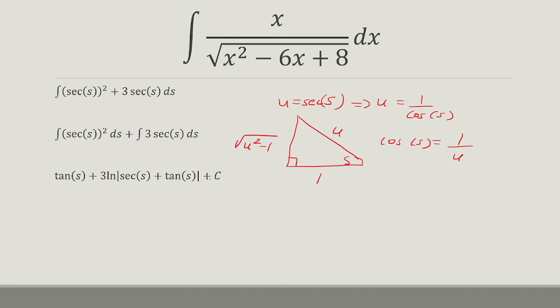And so tangent of s is just opposite over adjacent. That's going to be the square root of u squared minus 1. Secant of s is hypotenuse over adjacent. That's u. And so now we have an expression that only depends on u.